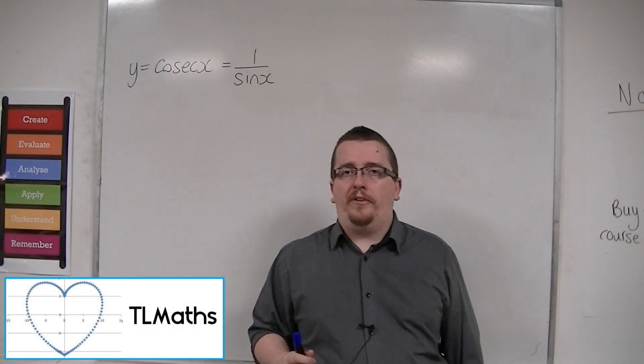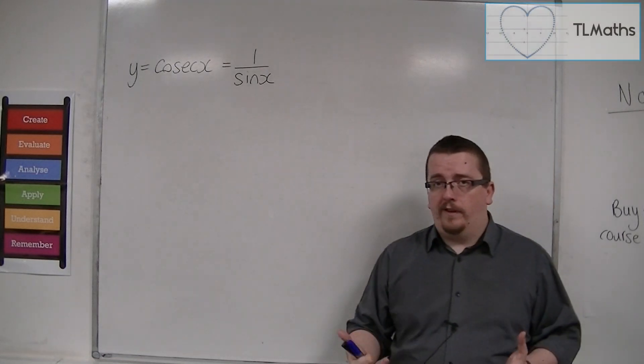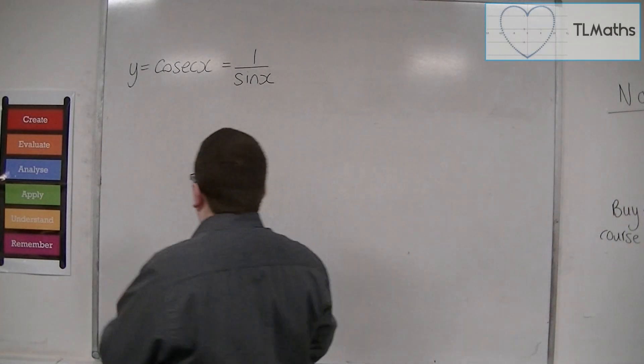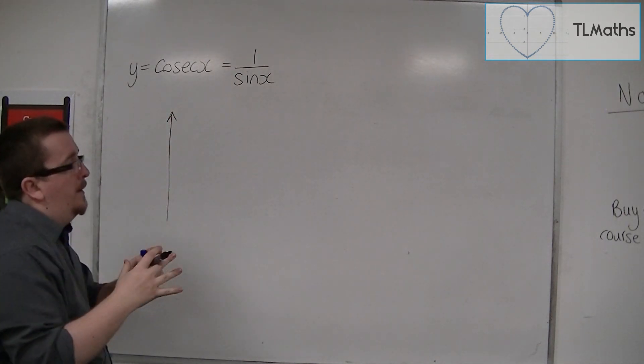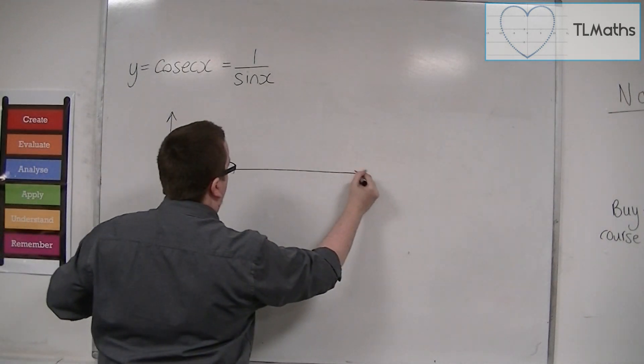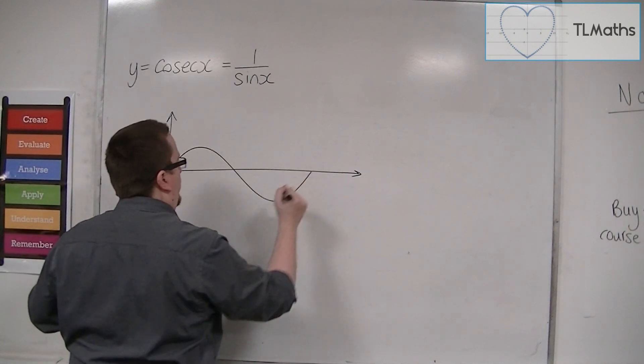So what does Cosec look like? We know what sine looks like, okay? So let's first sketch sine. I'm just going to look at sine between 0 and 2π. So sine looks like this.